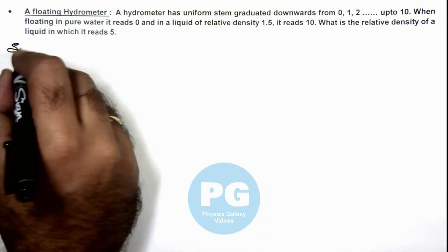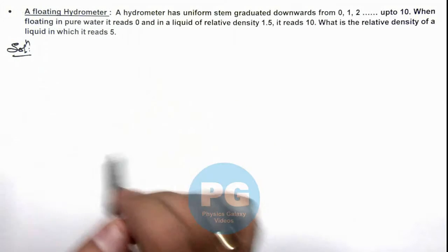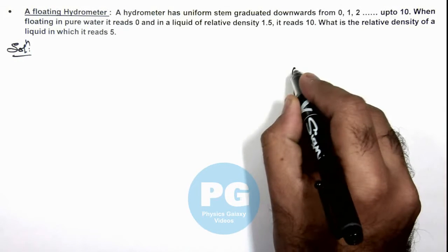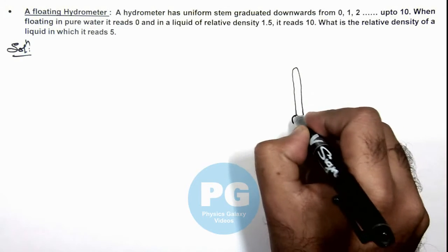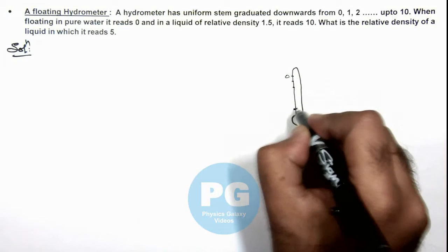So before proceeding with the solution, we need to first understand. This is a hydrometer stem, and there is a bulb below it. And it is marked at zero, 1, 2 up to 10.